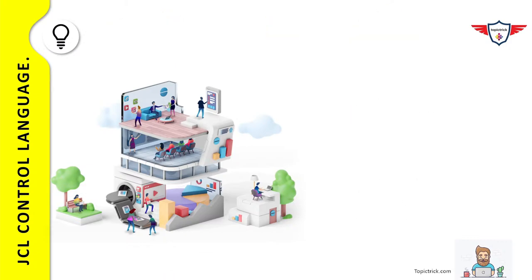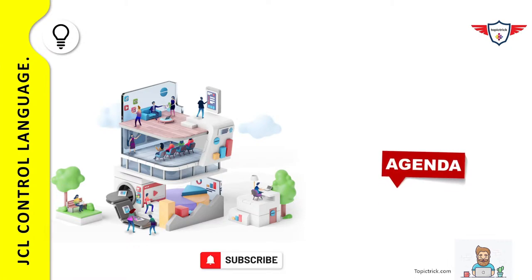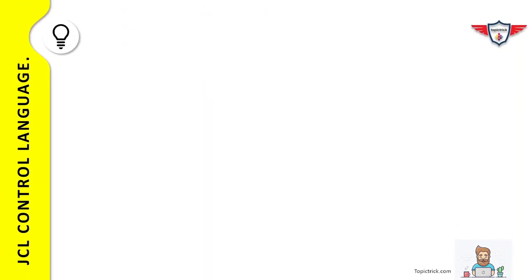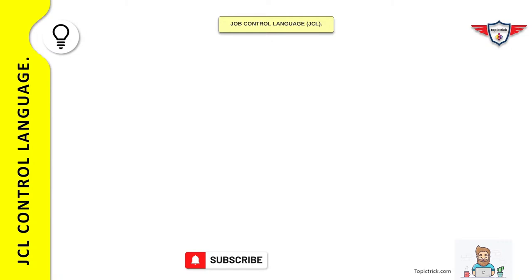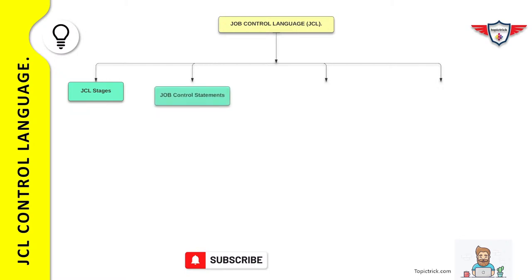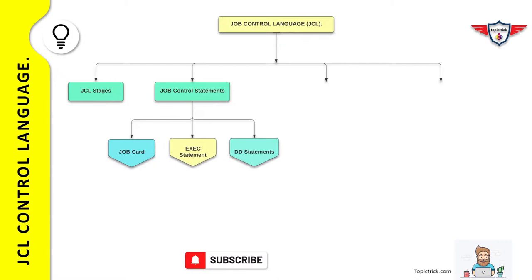Without wasting any time, let's focus on today's agenda. We start today's session with an introduction to IBM mainframe. Then we will understand the term JCL and why it is important from a mainframe perspective. Then we will deep dive into different stages of JCL, followed by job control statements — including job card, execute statement, and DD statements.